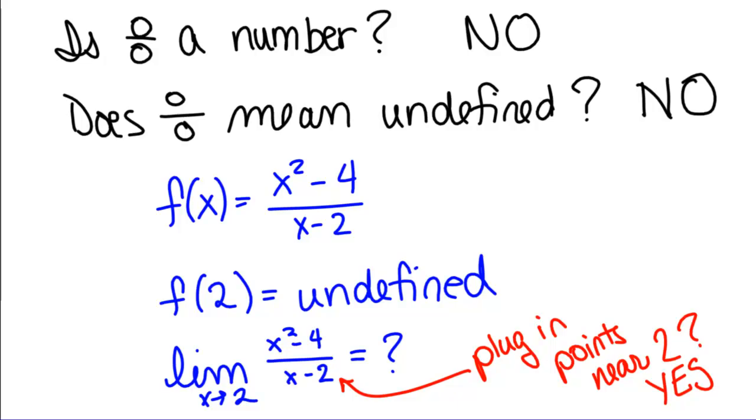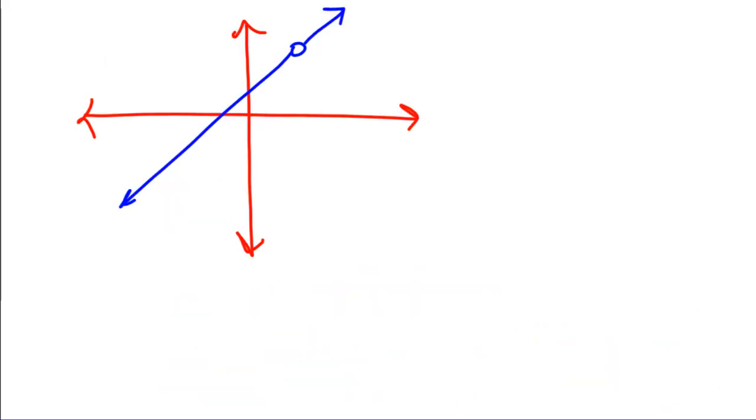In fact, if we look at this function graphically, it turns out it looks like a straight line with a hole in it at 2, and how would I know that?